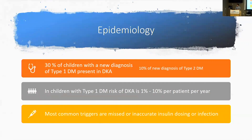In children with known type 1 diabetes, their risk for going into an episode of DKA tends to be about 1 to 10% per patient per year. Most commonly these are triggered by missed or inaccurate insulin dosing, or infection, injury, or some other stressor. As you get into the adolescent or teenage years, infections and injuries become less common, and it's more about ineffective or just missing insulin doses.